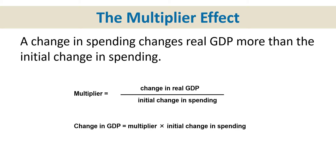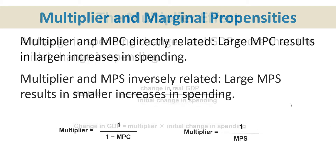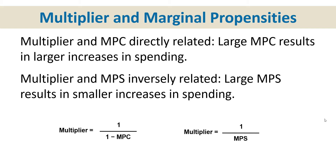How do we calculate it? The multiplier equals the change in real GDP divided by the initial change in spending. Here's another formula to consider: the multiplier is linked to the marginal propensity to consume and the marginal propensity to save.